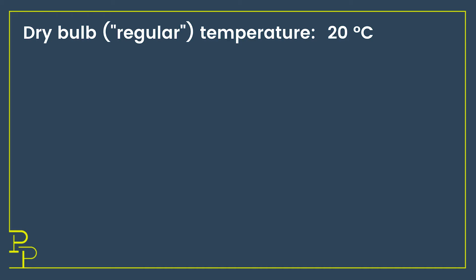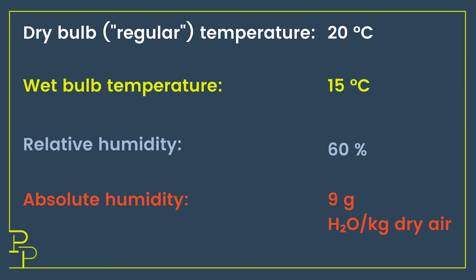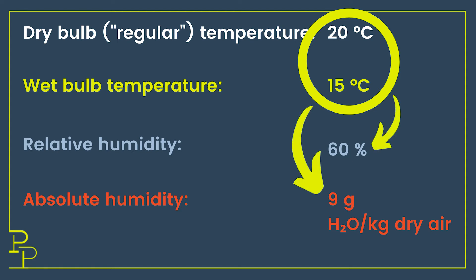If you have the dry bulb temperature — regular temperature — and also a wet bulb reading, you can use tables or charts to obtain the relative humidity, which is the percentage of available space in the air already taken up by water. You can also get the absolute humidity, measured in grams of water per kilogram of dry air. You only need two out of four of these variables to fully define the other two. Dry bulb and wet bulb temperatures are easy to measure with just a thermometer and a wet cloth, whereas measuring humidity directly requires a special instrument. So wet bulb temperature is a proxy for humidity.